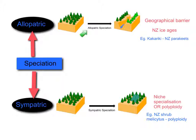To recap: allopatric speciation involves similar species in different geographical locations because of some kind of geographical barrier — this is where the ice ages often tie in. Sympatric speciation occurs in the same area and generally involves niche specialisation or polyploidy. That's it for the speciation summary; the next video is going to look at patterns of evolution.